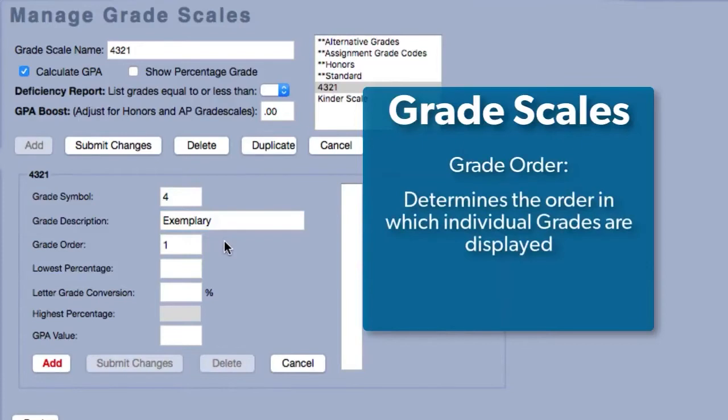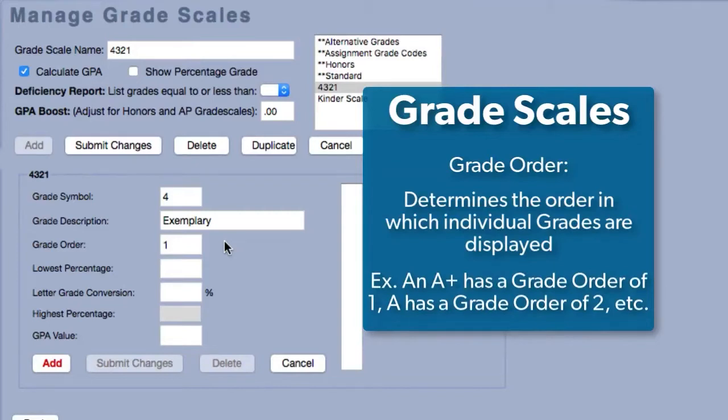Grade Order determines the order in which grade codes are displayed. For example, an A-plus on the A-through-F scale would have a grade order of 1, an A would have a grade order of 2, and so on.